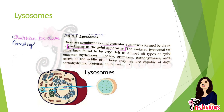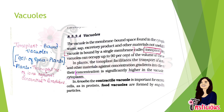Lysosomes are membrane-bound vesicular structures formed by the packaging of the Golgi apparatus. They were discovered by Christian de Duve. They are called the suicidal bags of the cell because they contain enzymes that can digest carbohydrates, proteins, lipids, and nucleic acids. The last organelle of the endomembrane system is the vacuole, which is tonoplast-bound.